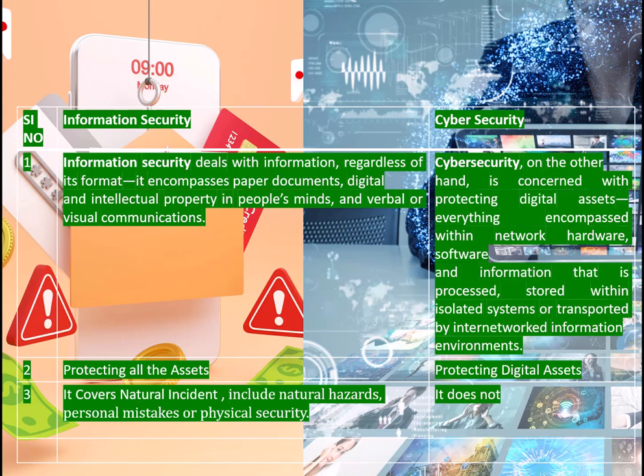Cyber security, on the other hand, is concerned with protecting digital assets — everything encompassed within network hardware, software, and information that is processed, stored within isolated systems, or transported by internetworked information environments. Information security focuses on protecting all assets, whether digital or physical, whereas cyber security focuses only on digital assets and does not cover natural hazards, personal mistakes, or physical security.